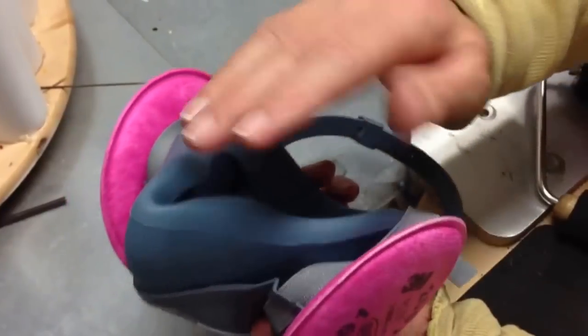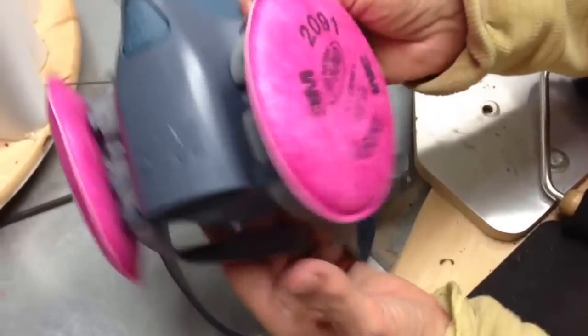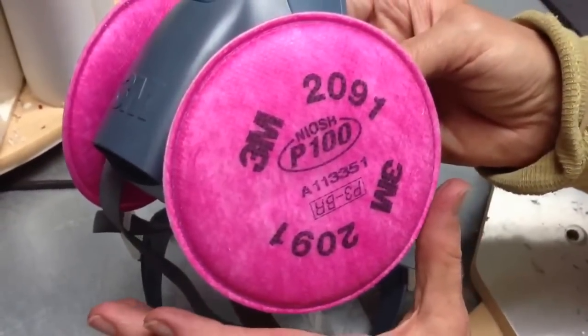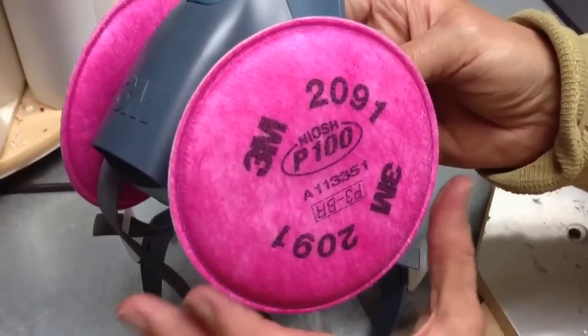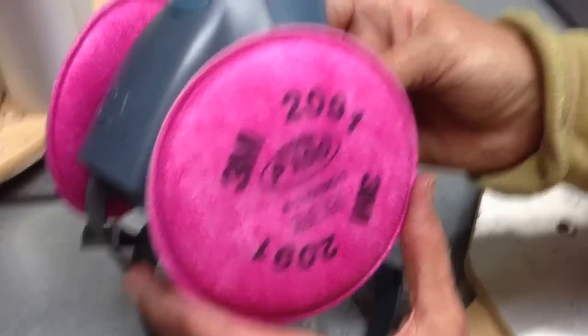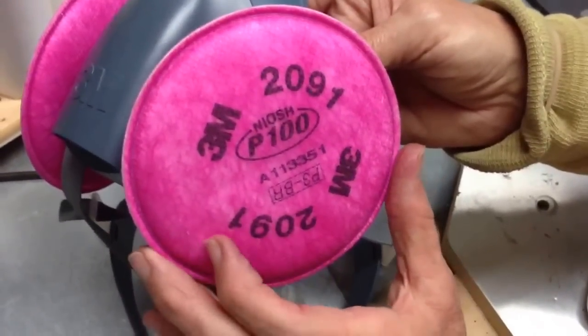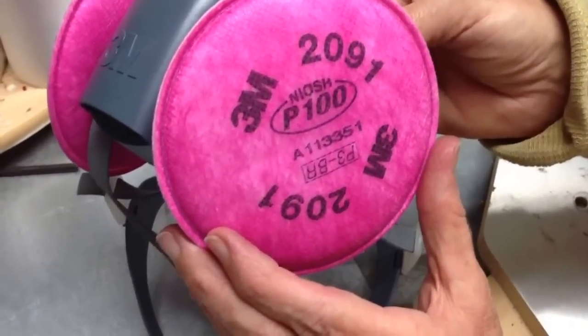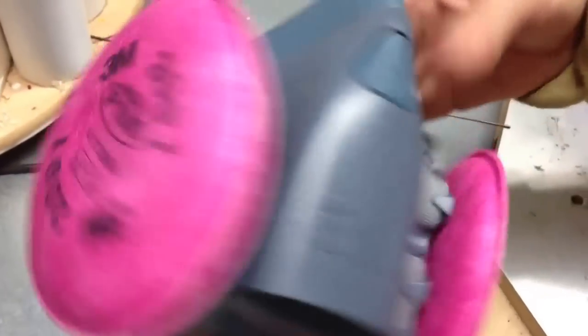Always clean it after you use it. This is the filter for minerals like silver and gold and any kind of fuming. It's the 2091 PP100 filter. I use this when I fume.